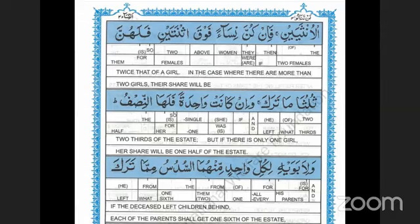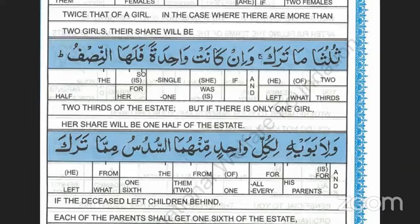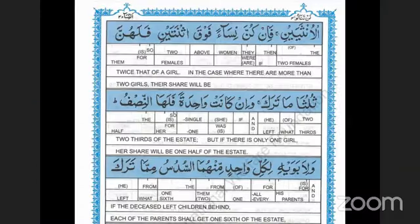Fa li ummihi as-sulusu — so for his mother is the one-third. Fa in kana lahu ikhvatun — then if he had brothers. Fa li ummihi as-sudusu — then for his mother is the one-sixth. These are all the shares of inheritance. Min badi wasiyyatin — after a will, bequest. Yusi biha — he fulfills the terms of the will. Au dainin — or a debt. Abaaukum wa abnaaukum — your parents and forefathers and your children, your offsprings.